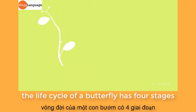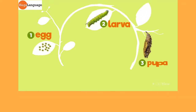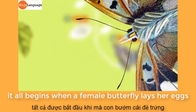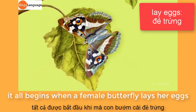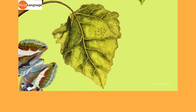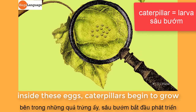The life cycle of a butterfly has four stages. It all begins when a female butterfly lays her eggs. Inside these eggs, caterpillars begin to grow.